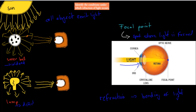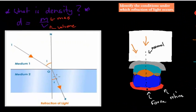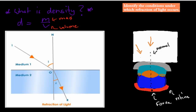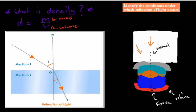The lens, cornea, aqueous humor, and vitreous humor are involved in this, and that's what we're going to talk about in the next couple of videos. But in this video, we're going to identify the conditions under which refraction of light occurs — name the conditions under which bending of light occurs. There are a couple of things you need to know. First of all, you need to know what density is. Density is mass divided by volume.